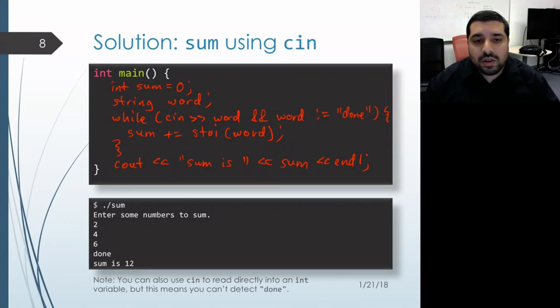Now finally, the user enters in done. When that extraction happens, then word is equal to done, which means that test inside the condition of our loop fails, and we exit the loop and print out the sum, which is 12.